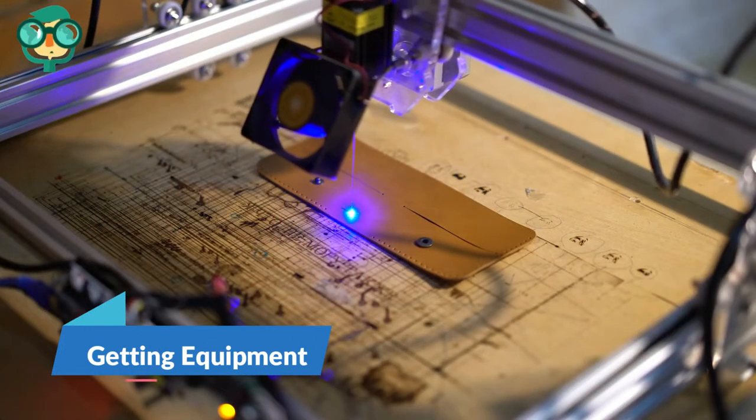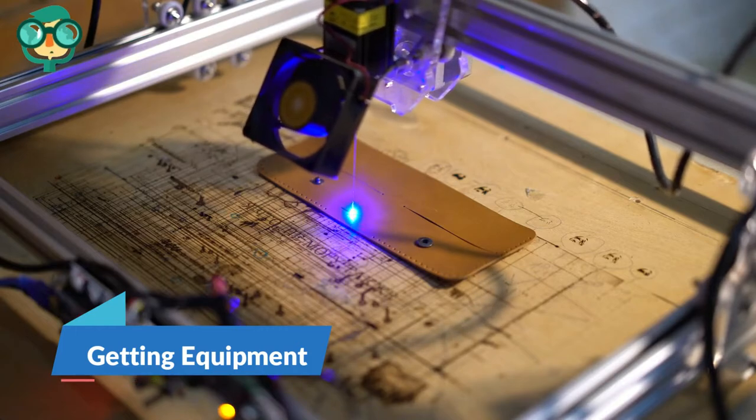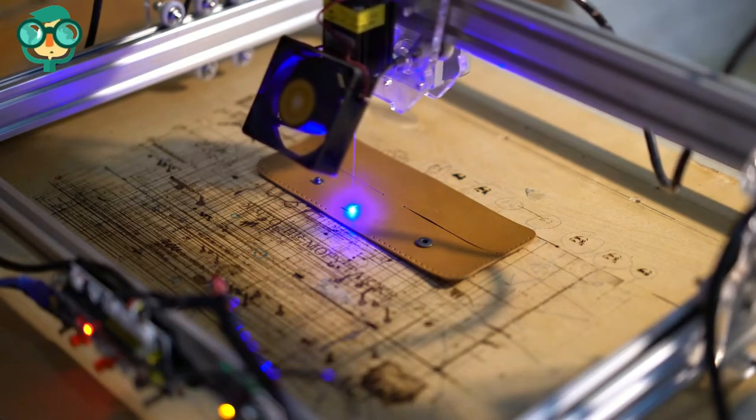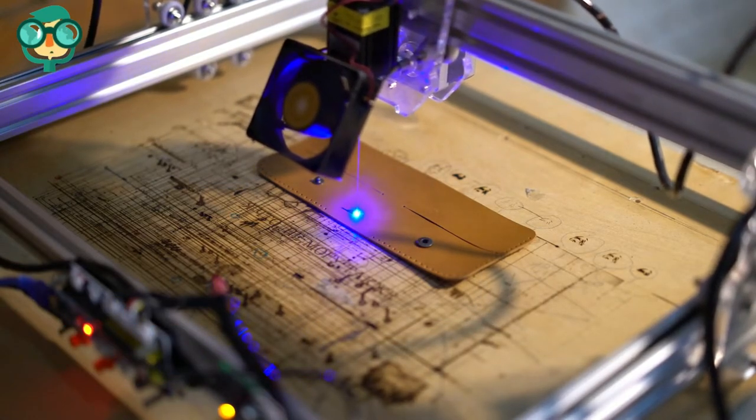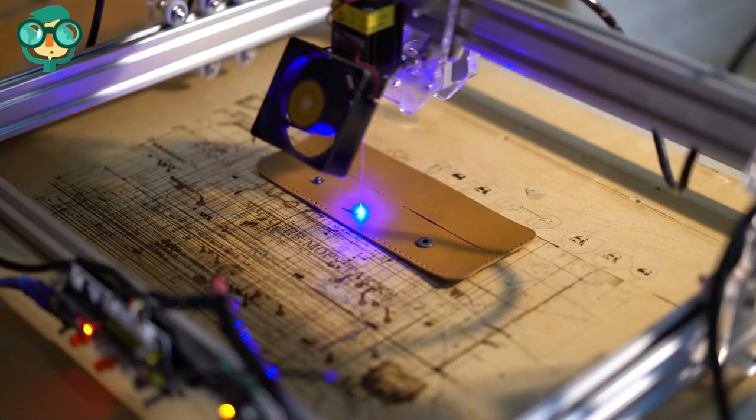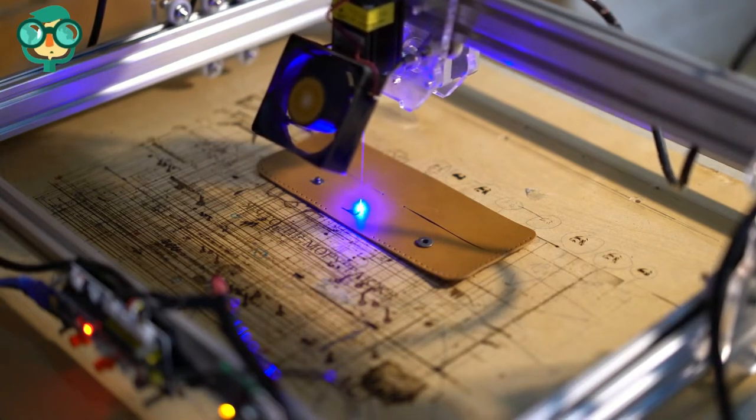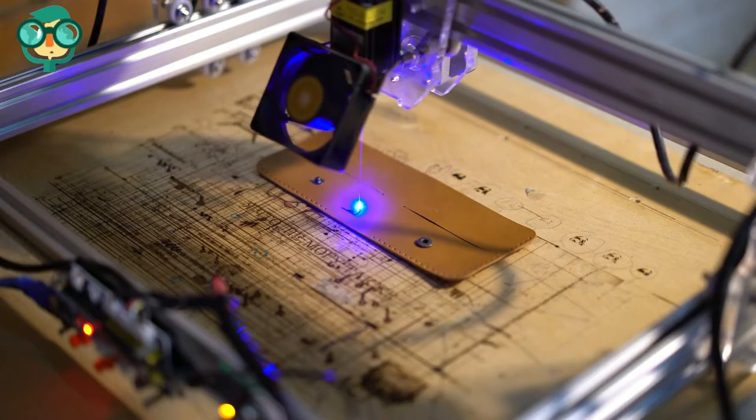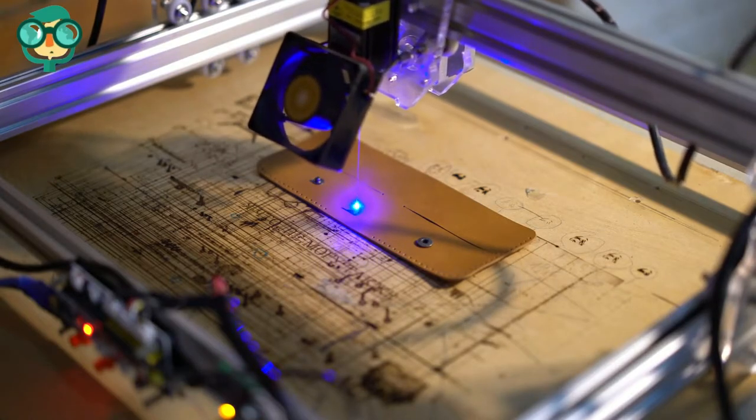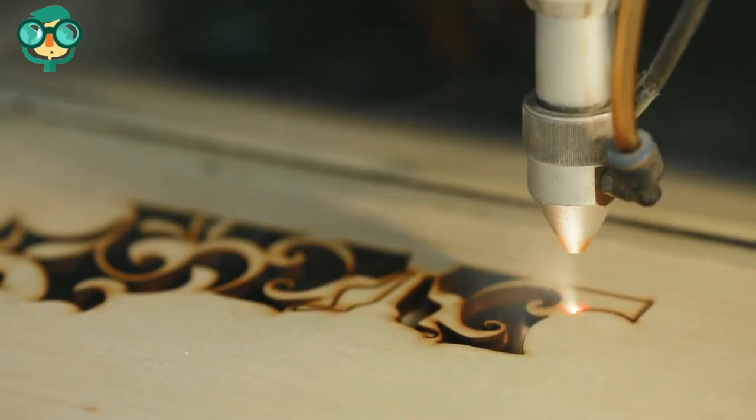The second step is getting equipment. Purchase a laser system. A laser system will cost between $8,000 and $45,000, depending on the wattage and engraving area of the laser. Your system should be at least 25 watts. Buy a laser that fits the needs of your business.